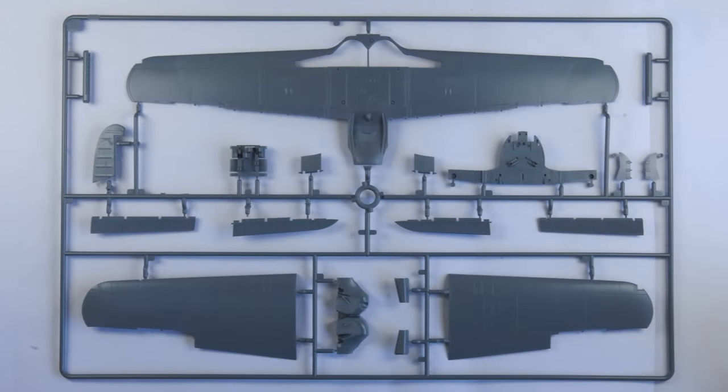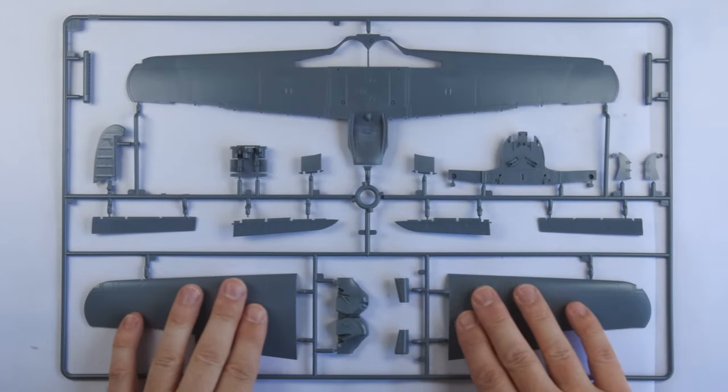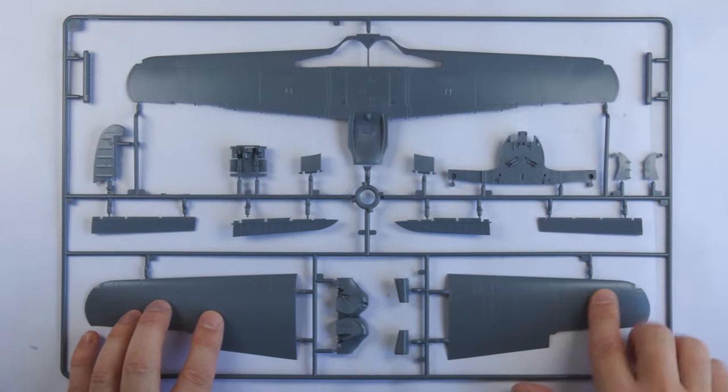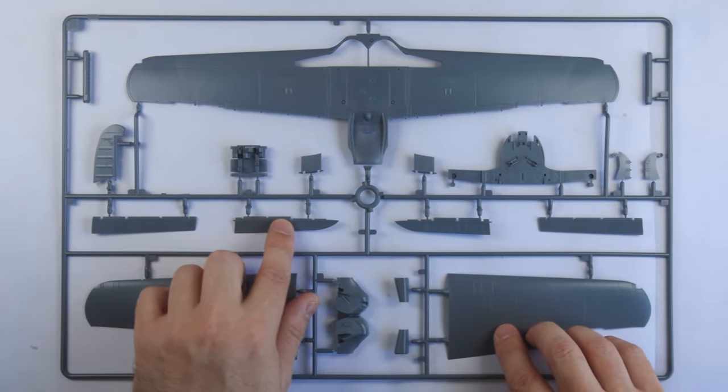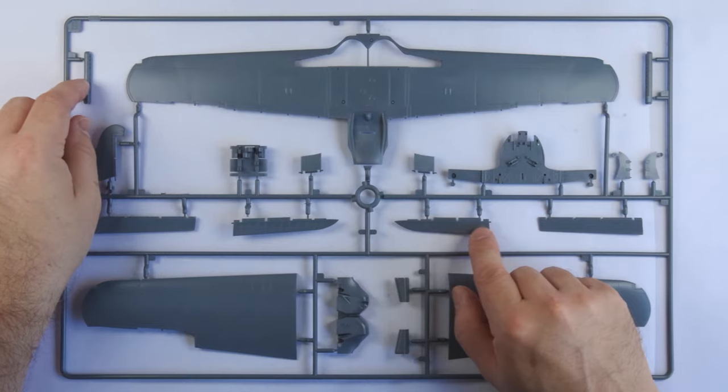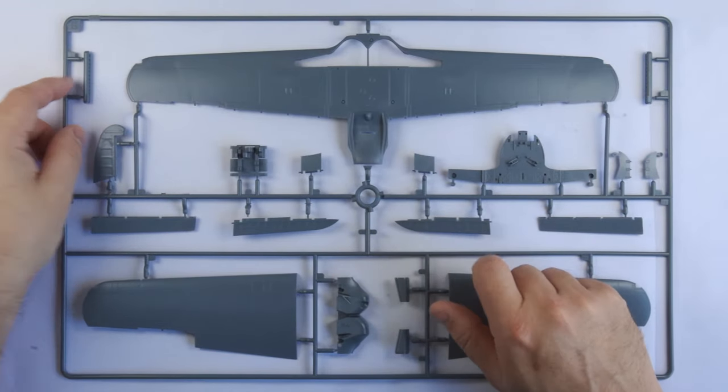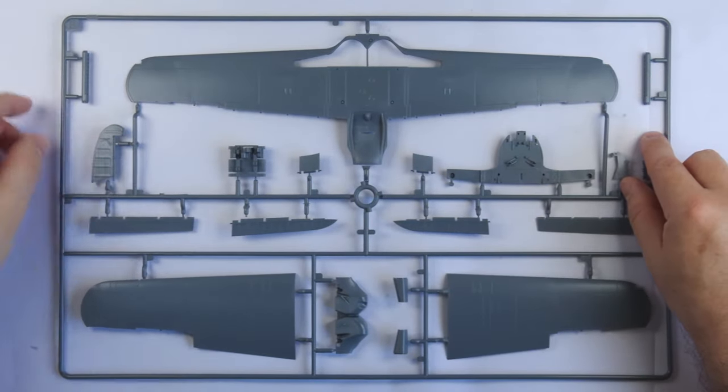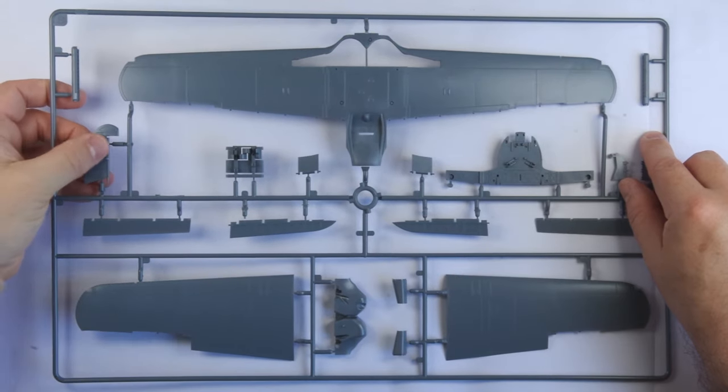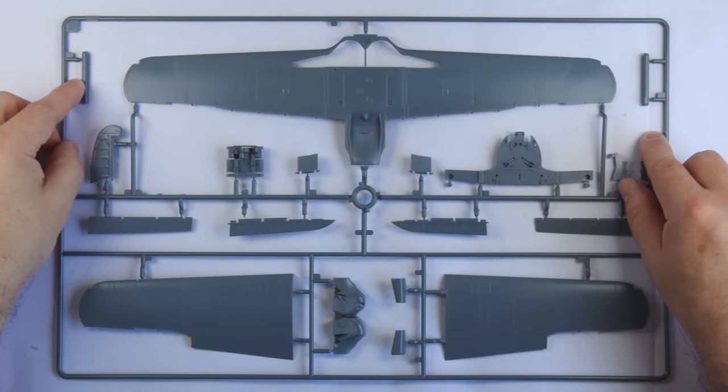Next up is the frame containing the wings, which has separate control surfaces and flaps, including the rudder, which being fabric covered, have this detail also molded into their surfaces. The level of finesse here is also extremely high, similar to what we're used to from Tamiya or recent Airfix releases.